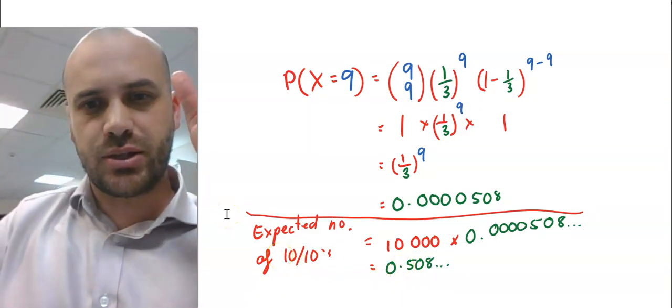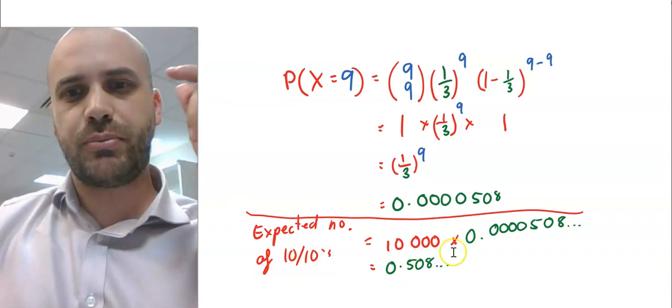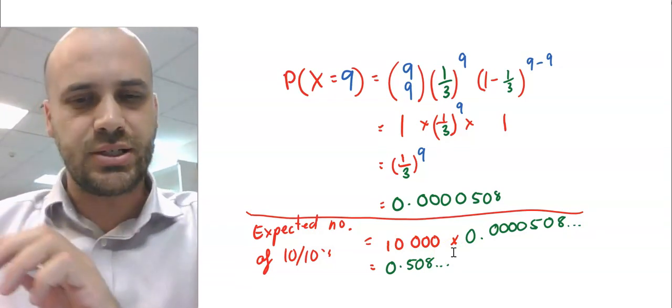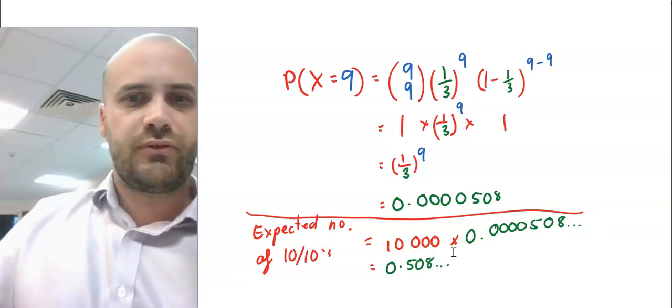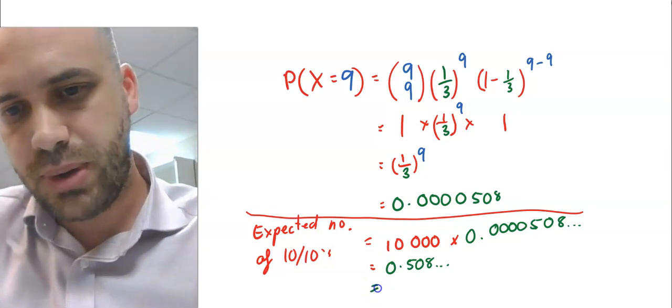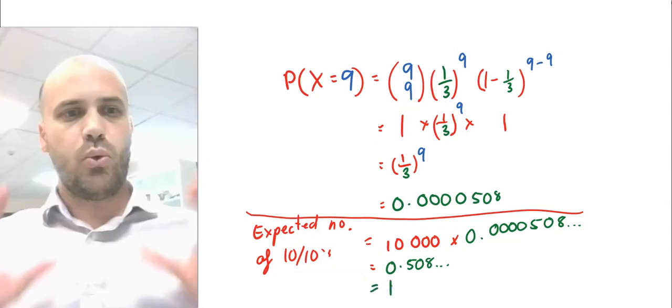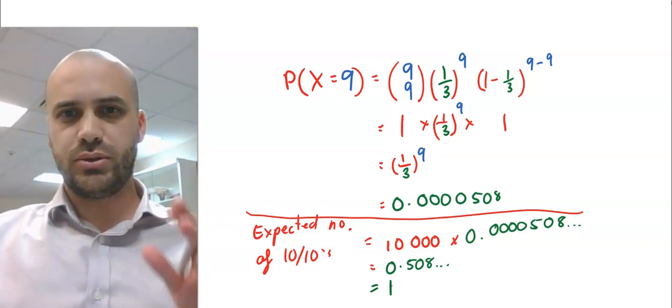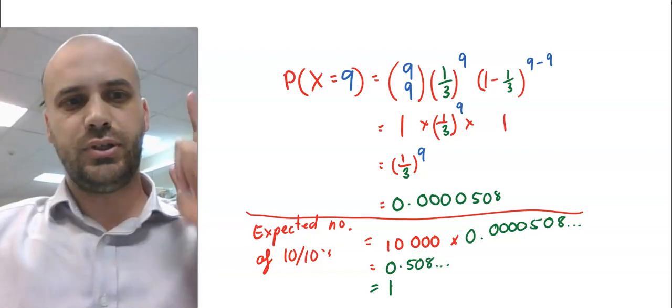And no doubt you are screaming at the screen saying you cannot have half a person. I agree. Look at this, 0.508. And that 8 there is enough for me to round up and say that I expect exactly one of you to get 10 out of 10 if we all use this method. Good luck.